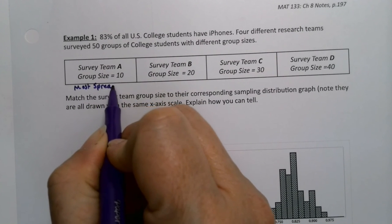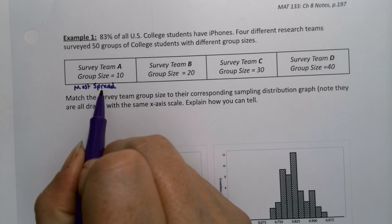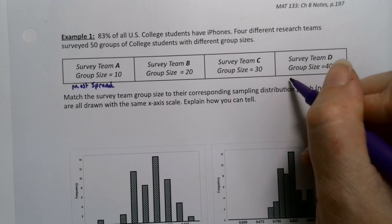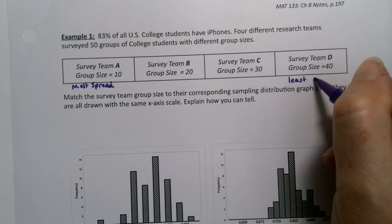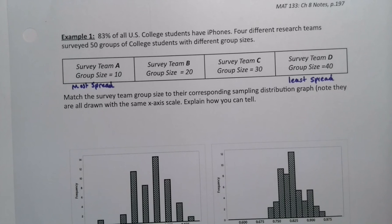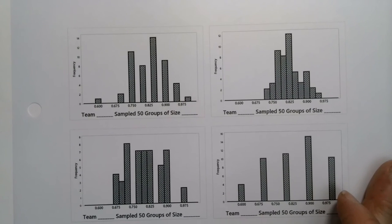Because that part is still true for both central limit theorems in proportions and for means. And this will have the least spread. It'll be the most compact. Well, that makes it pretty obvious, right?